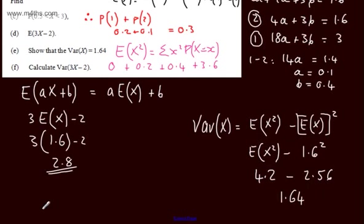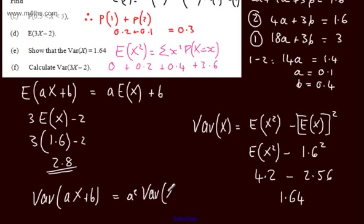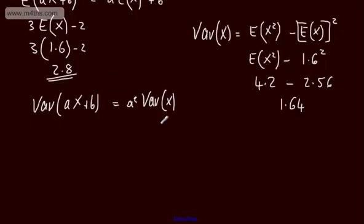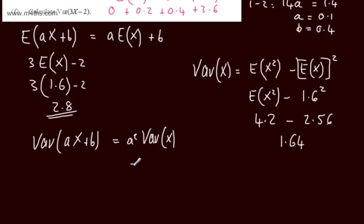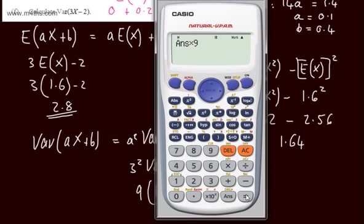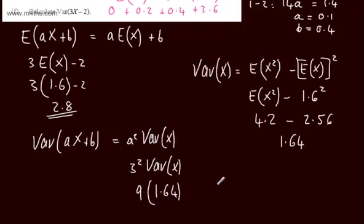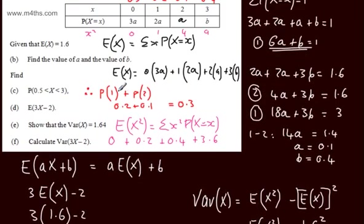Finally, we need to calculate Var(3x − 2). Using Var(ax + b) = a² Var(x), we get Var(3x − 2) = 3² × 1.64 = 9 × 1.64 = 14.76. So that's the question done — two fairly standard exam-style questions on discrete random variables.